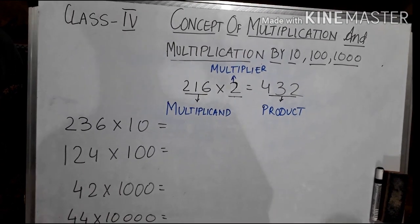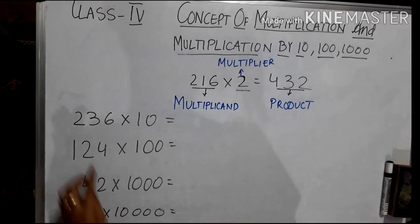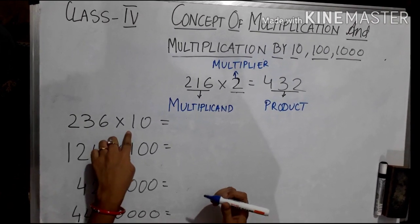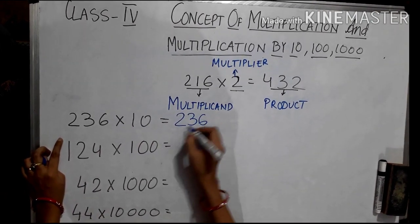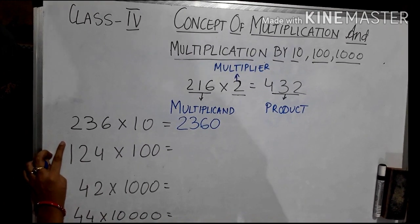Now let us do some multiplication by ten, hundred and thousand. Here my first number is 236 multiplied with ten. So what is my answer now? 236 into ten means I will put only one zero in my product side.